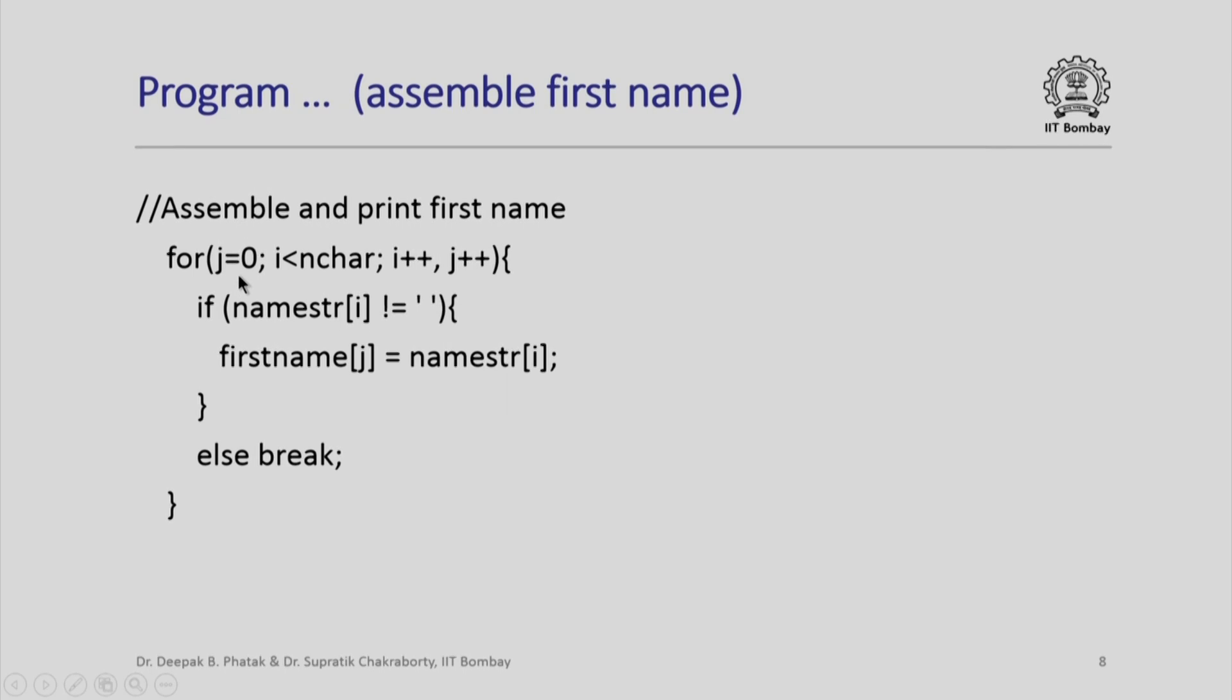So what we are doing is while assembling the first name, we start with j equal to 0, which will be the index into the firstname array. This will be incremented by 1 as i will be incremented. Essentially what we are doing is we are going to stuff consecutive non-blank characters inside the firstname array. Notice that inside this loop, all that we do is if the character that we encounter is not blank, it is part of the current word. So we insert that into the firstname. Notice we pick up the ith character of namestring and insert it into the jth character of firstname.